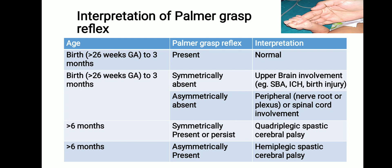After six months of age, if the reflex persists symmetrically in both upper limbs, the infant is likely to develop quadriplegic spastic cerebral palsy. If it persists asymmetrically in one limb, there is a chance of developing hemiplegic spastic cerebral palsy.